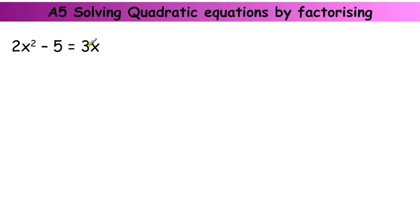This equation here is a quadratic equation because it has an x squared term in it. It's not the easiest of quadratics because it's got a 2x squared. It's not obviously a quadratic because you've got 3x on this side.